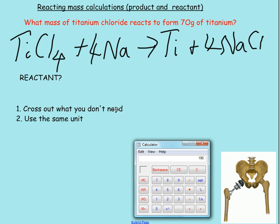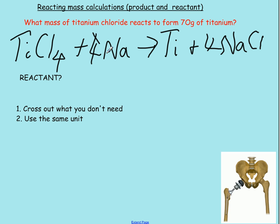Now, first off, the same with all these, you cross out what you don't need. So if we're looking at this question, what mass of titanium chloride, that one, reacts to form titanium, that means we don't need that and we don't need that. Now, remember, you only need one thing on each side, otherwise it's all gone wrong.